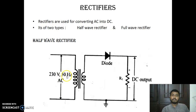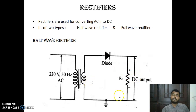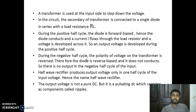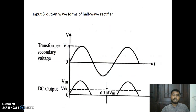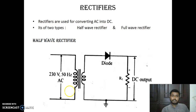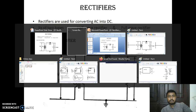This is the simple circuit diagram of a half-wave rectifier. The input is 230 volts at 50 Hz, and at the output we are getting a DC signal. To understand how the circuit is operating, we can take this diagram.